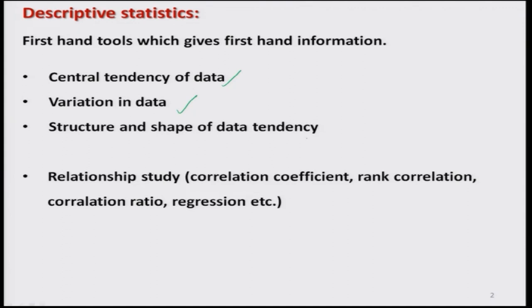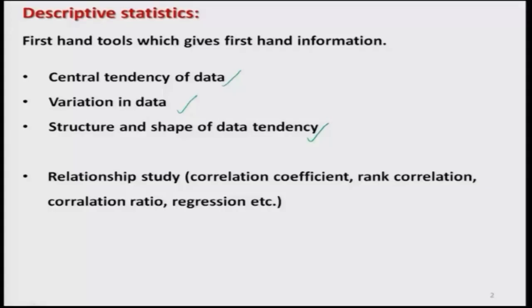Then the next aspect we studied was the structure and shape of the data. There we studied the concept of skewness and kurtosis and we also learned how to compute all these things in the R software. Now we are going to the last aspect — studying the relationship.